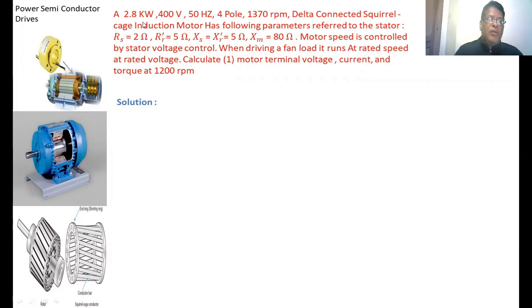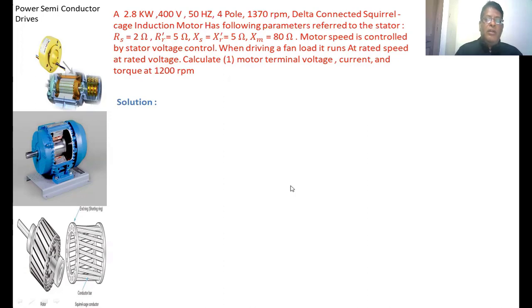A 2.8 kW, 400V, 50Hz, 1370 RPM, delta-connected induction motor has the following parameters referred to the stator: stator resistance RS = 2 Ohms, rotor resistance referred to stator RR' = 5 Ohms, stator and rotor leakage reactances XS = XR' = 5 Ohms, magnetizing reactance XM = 80 Ohms. The motor speed is controlled by stator voltage control when driving a fan load, and it runs at rated speed at rated voltage.